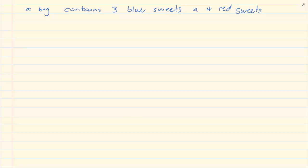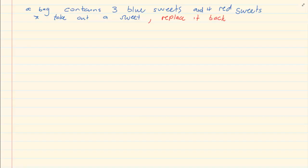You have a bag that contains three blue sweets and four red sweets. Now watch how I am saying the question — you take out a sweet and once you take it out you replace it back. So we are not eating the sweet; we are just playing a game. You take out the sweet, you put it back. Then they ask: what is the probability of getting a red and a red sweet? All in all we have seven sweets.